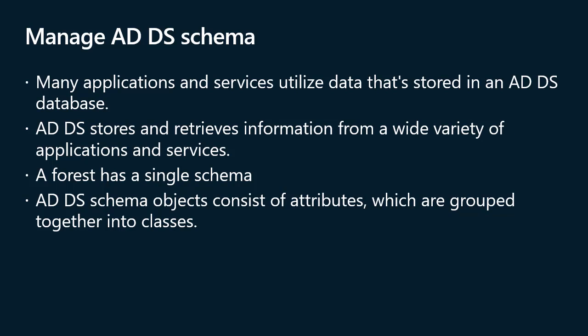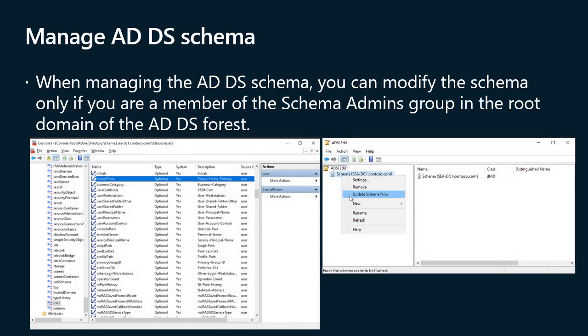ADDS schema objects consist of attributes grouped together into classes. Each class has rules defining which attributes are mandatory and which are optional. For example, the user class consists of more than 400 possible attributes including CN (common name), given name, display name, object ID, and manager — of these, the CN and object SID attributes are mandatory. You can modify the schema only if you are a member of the schema admins group in the root domain of the ADDS forest. You should change the schema only when necessary, and only after reviewing and testing the changes, as they affect every domain controller.